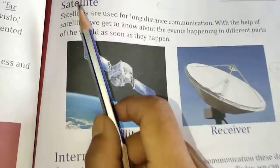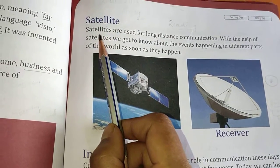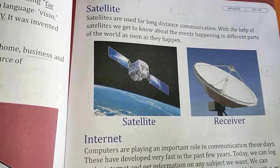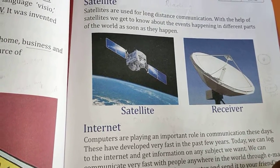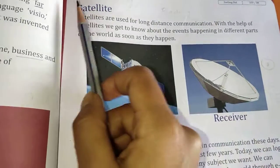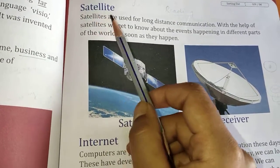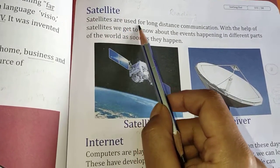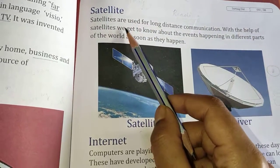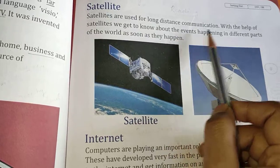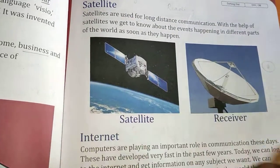Page number 29 — what is a satellite? We know that a natural satellite revolves around Earth. The sun is an example. But there are also artificial satellites. Satellites are used for long-distance communication. With the help of satellites, we get to know about events happening in different parts of the world as soon as they happen.